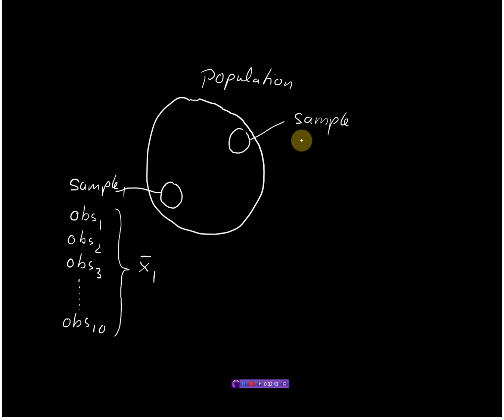And again I can measure a certain number of students. Say observation one—that's my first student here in this sample two. Observation two—that would be my second student, and so on and so forth. And again I can do that how often I like. So that would be observation n. And I can again calculate the average of these students and I would get another average. Now I can do that several times. So this would be sample three and so on and so forth.